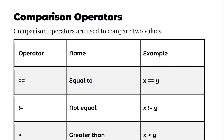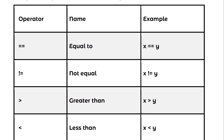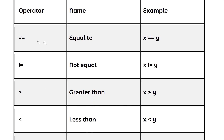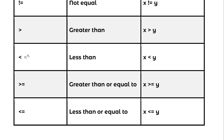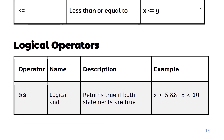Now let's learn about comparison operators. Comparison operators are used to compare two values. Double equals is the comparison operator to check equality — for example, x equals equals y checks if x is equal to y. Not-equal uses the exclamation mark and equals sign. We also have greater than, less than, greater than or equal to, and less than or equal to.